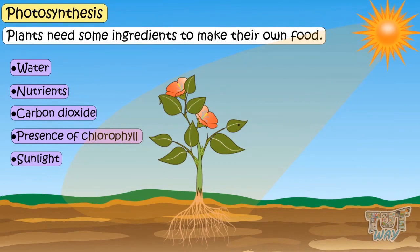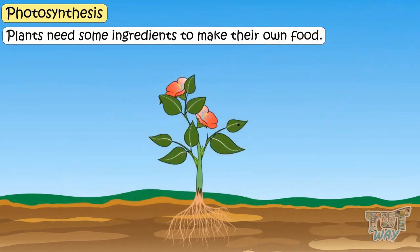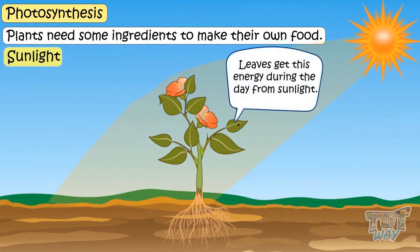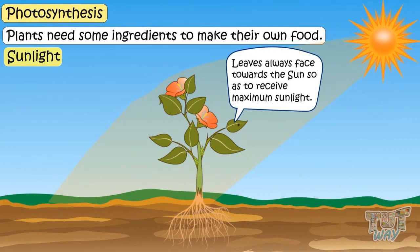First is sunlight — it is the energy. Leaves get this energy during the daytime from sunlight. Leaves always face towards the sun so as to receive maximum sunlight.